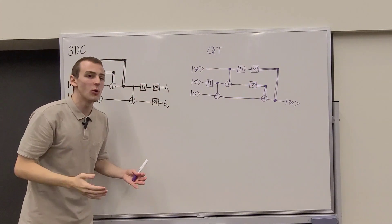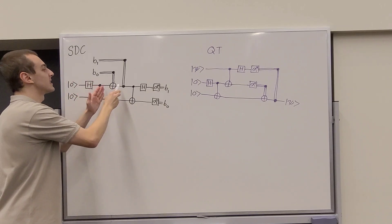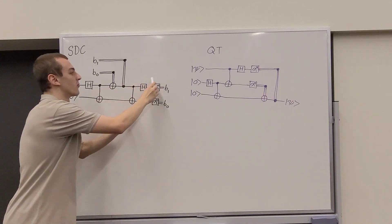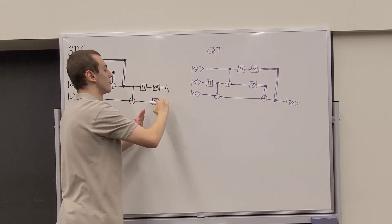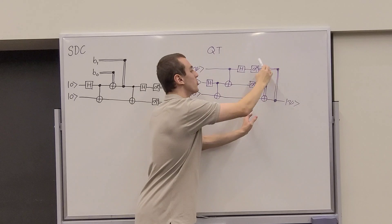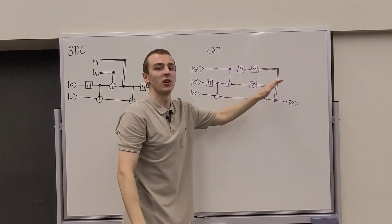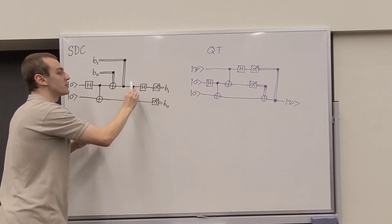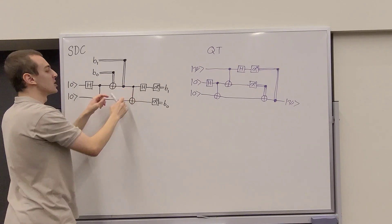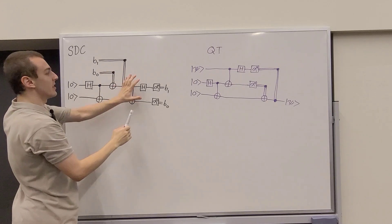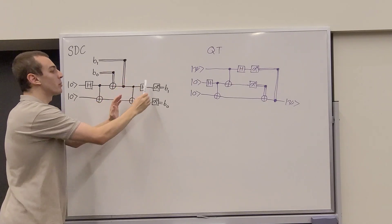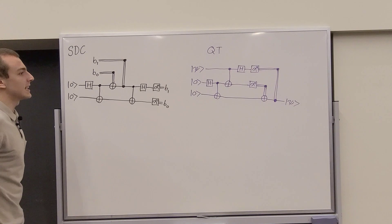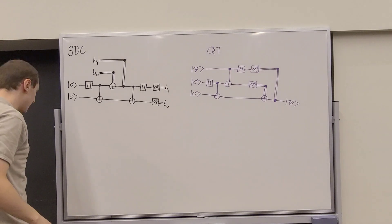The tasks that Alice and Bob perform differ between the two protocols. In SDC, Alice implements the classically controlled bit and phase flips, while Bob un-entangles and measures. In quantum teleportation, Alice performs measurements and sends classical bits through a classical channel, whereas SDC requires a quantum channel to send the qubit from Alice to Bob.